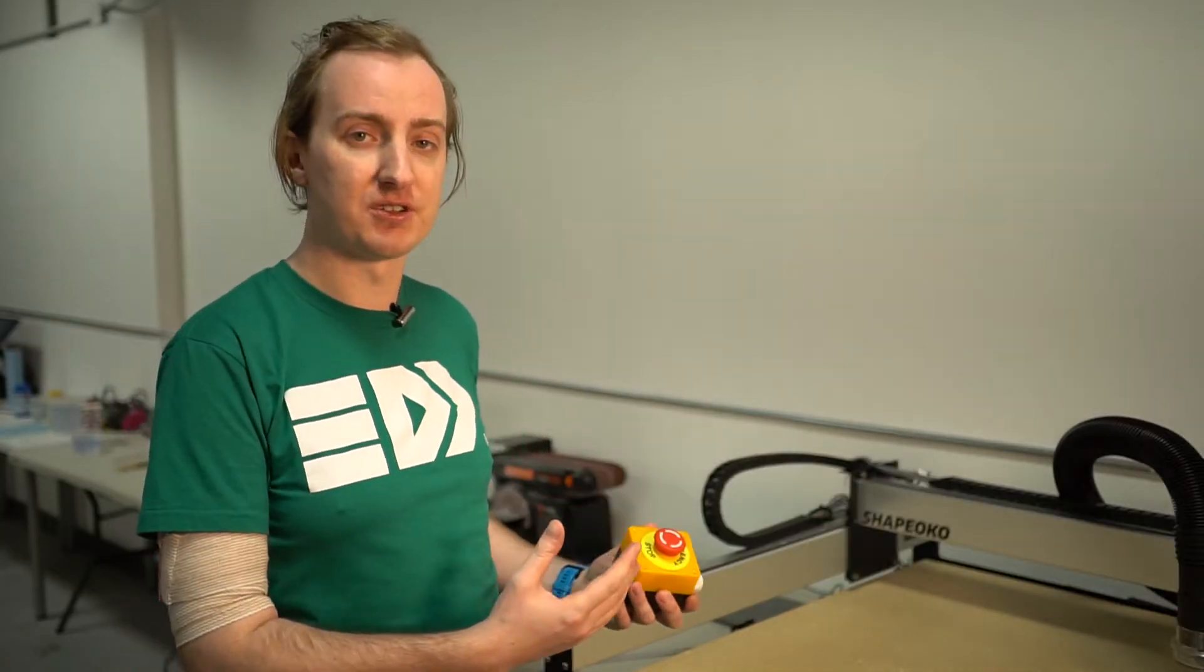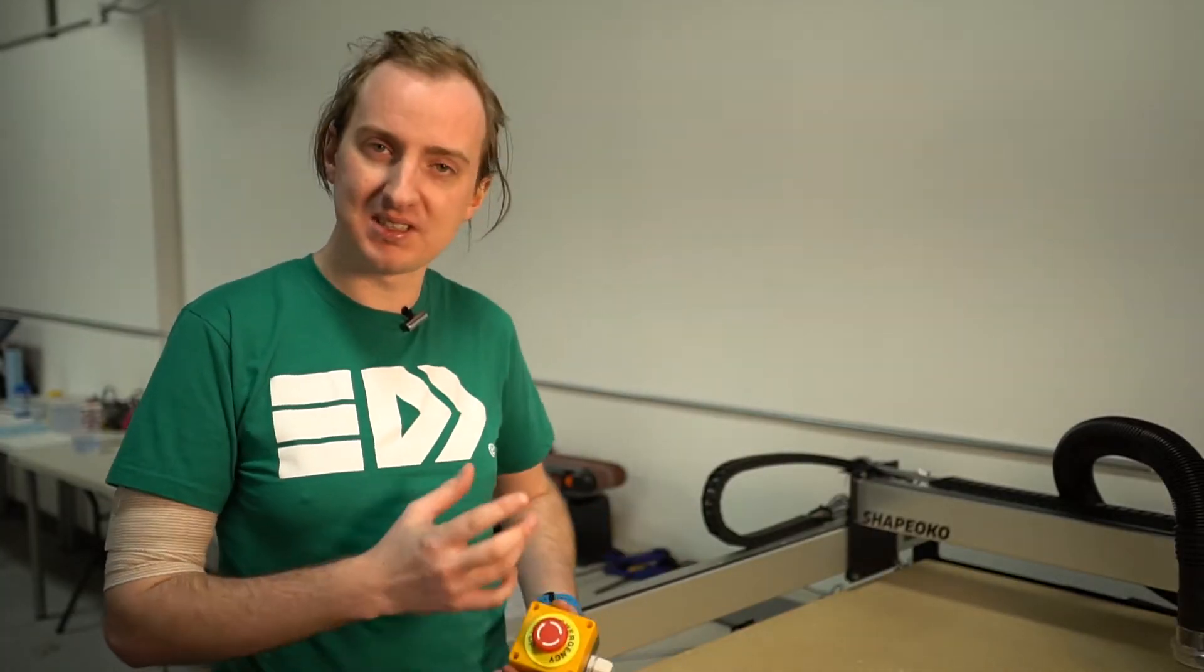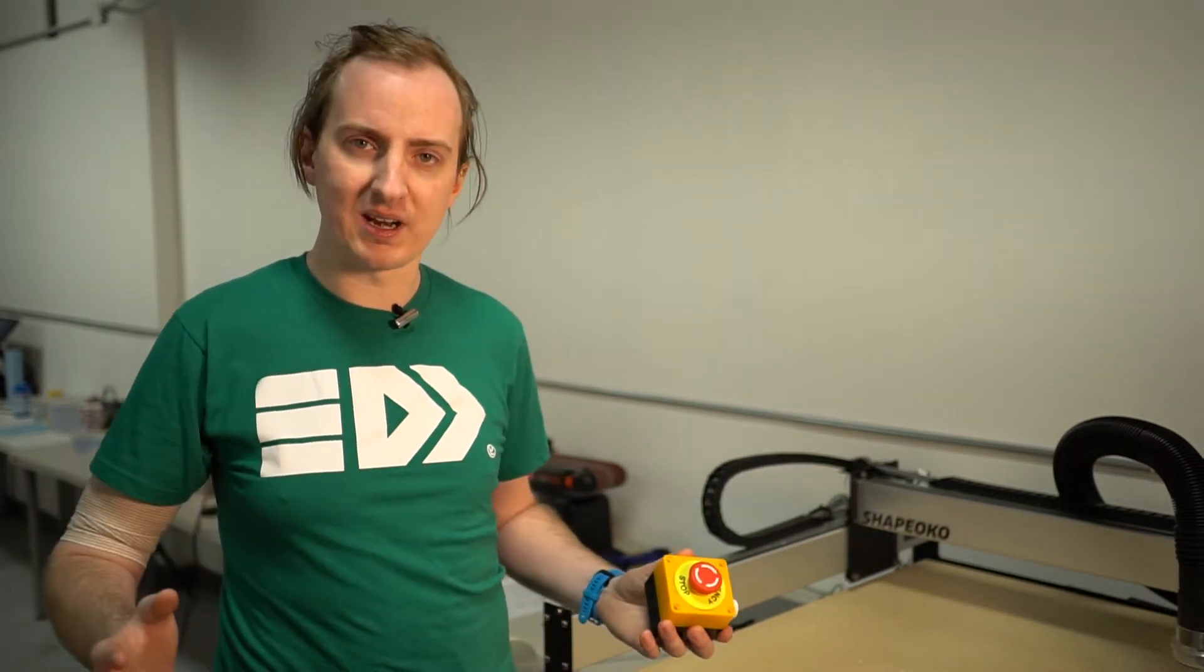Now, on older versions of the Shapeoko, that movement controller did have a couple of connectors for an e-stop button that you could hook something up, you hit the button, the machine would stop moving, but the spindle wouldn't stop. Remember, separate power circuit. So I want to fix all of that in one go.